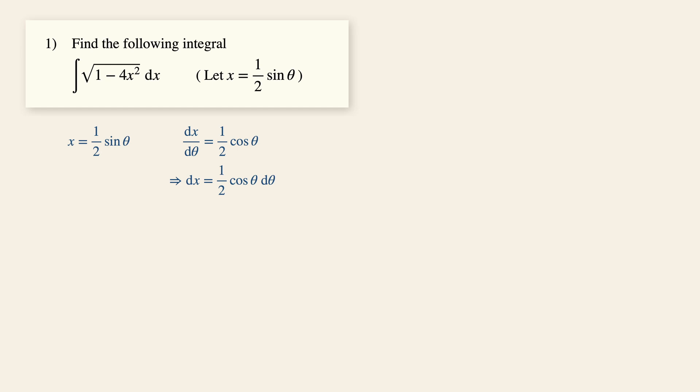Now with this information, we can then convert all the x that you see here to theta. Let's rewrite the original expression to give us the integral of square root 1 minus 4 times half sine theta squared multiplied by half cosine theta d theta.